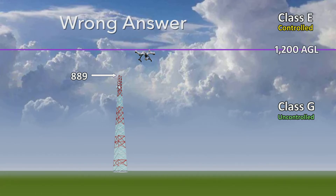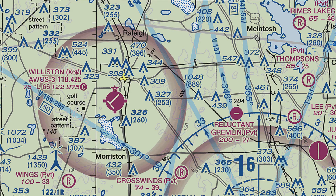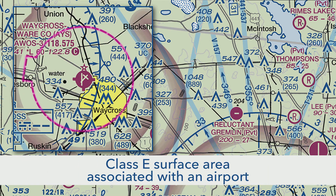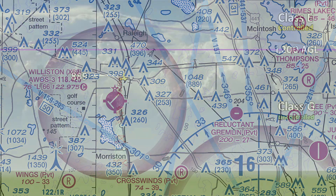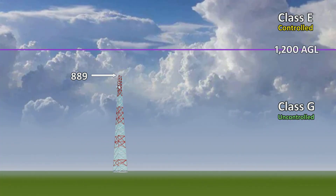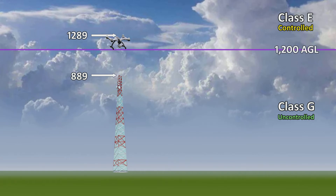It's perfectly fine to fly in Class E, as long as it's not a Class E surface area associated within the lateral boundaries of an airport. The tower is 889 feet tall — add 400 to that and you get 1,289 feet. That's the correct answer. It's inside of Class E, but that's just fine. No authorization needed. There you have it — the mysteries of Class E authorizations resolved.